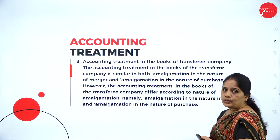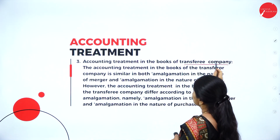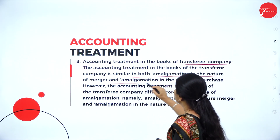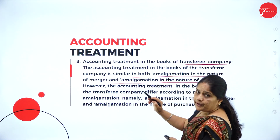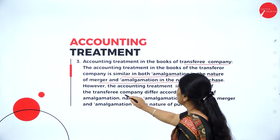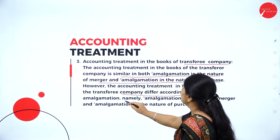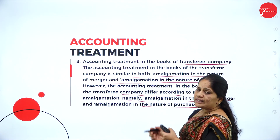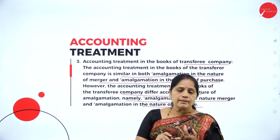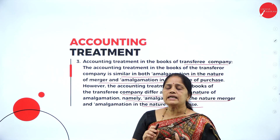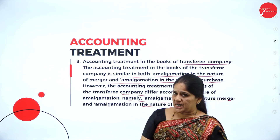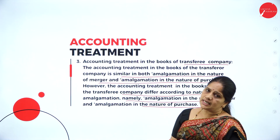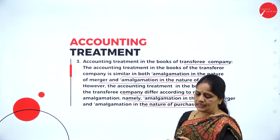The accounting treatment in the books of the transferee company is similar in both amalgamation in the nature of merger and amalgamation in the nature of purchase on the selling company's side. However, the accounting treatment in the books of the transferee company differs according to the nature of amalgamation — whether it is merger or purchase. In the purchasing company's books, there will be a small difference in the journal entries that we have to note.